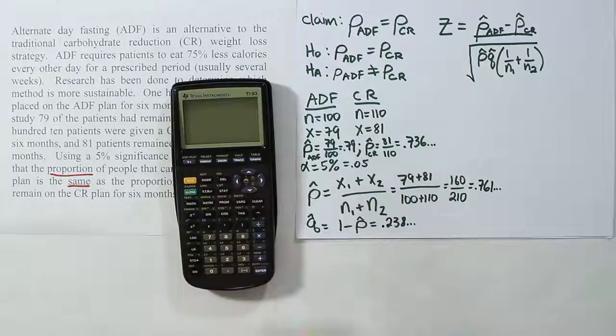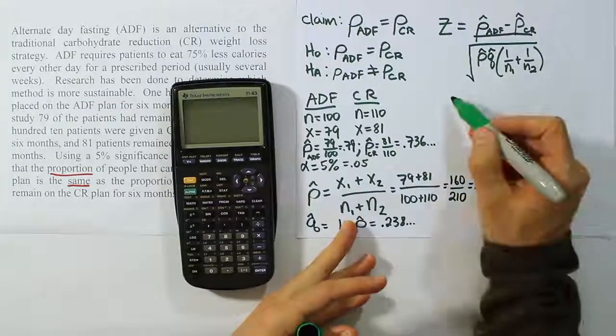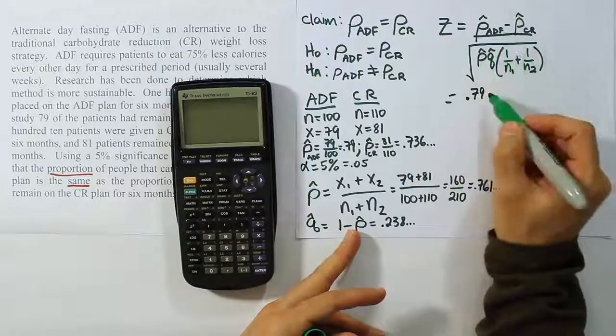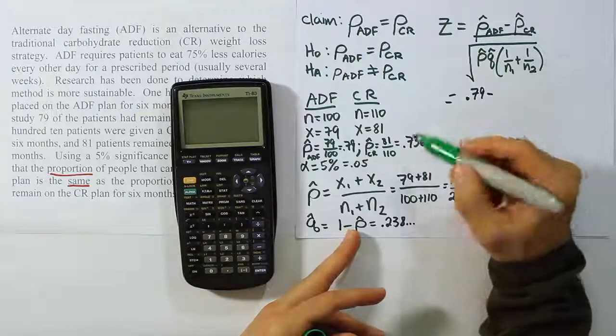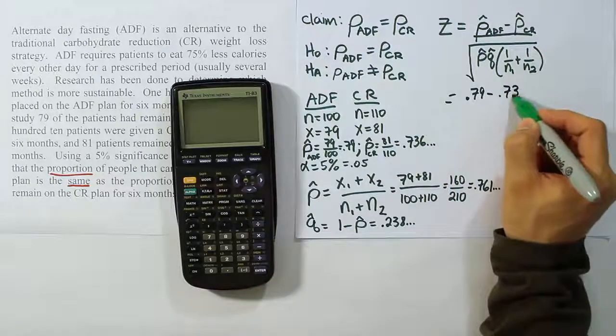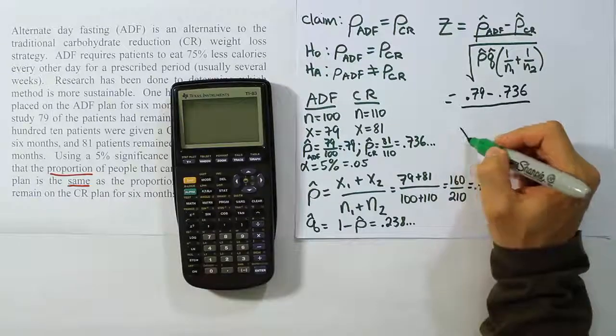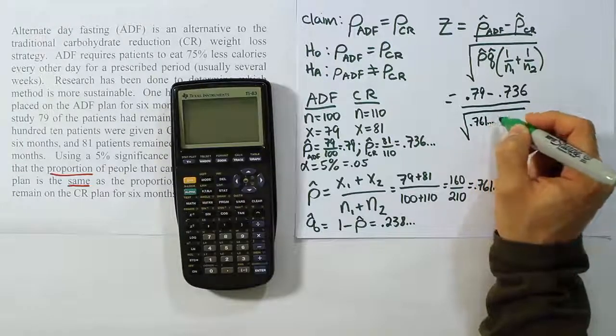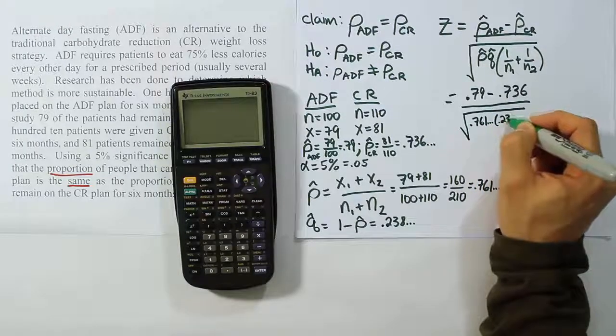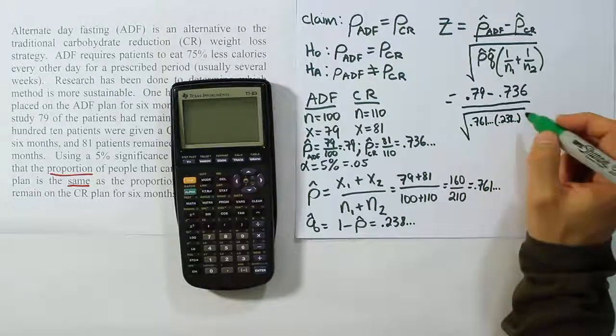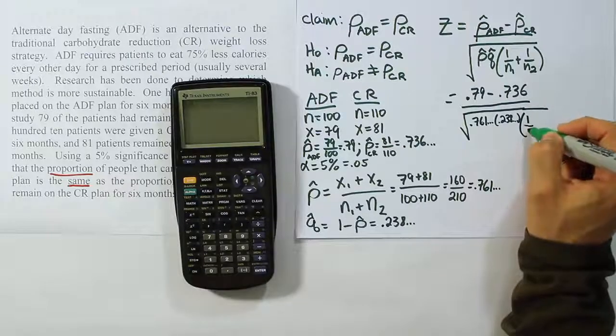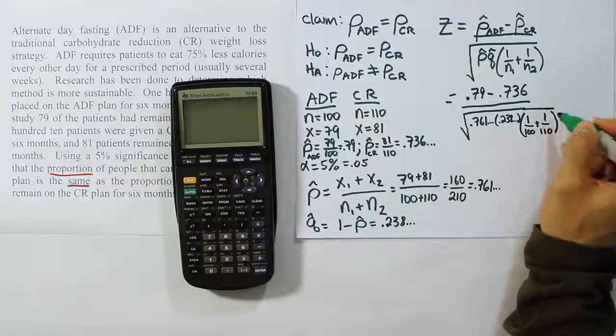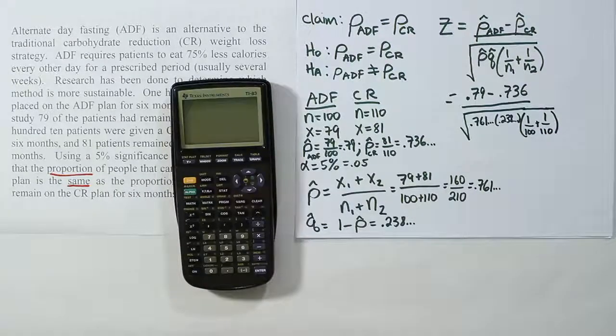Now from there, let's work out this formula. To do the test stat formula, we're going to have to plug in the numbers that we have. We'll start with the p-hat value for ADF. We said that was 0.79. The p-hat value for CR was 0.736. Then I'm going to divide that by the square root of the value we have for p-hat times q-hat times 1 over 100 plus 1 over 110. All that's under the square root. It's probably harder to write down than to actually work out.